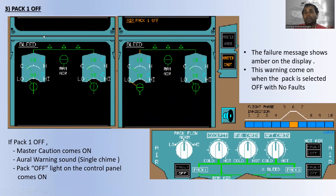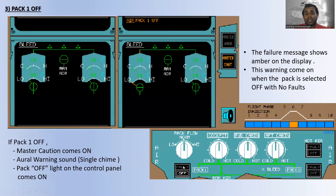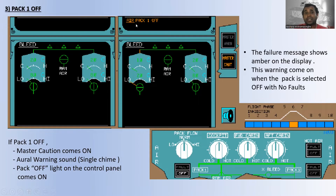If pack one is off, the master caution comes on in amber color and the oral warning sounds as a single chime. The pack off light on the control panel comes into view. The failure message is shown in amber on the display reading 'air conditioning pack one is off.' This warning comes on when the pack is selected off with no fault.